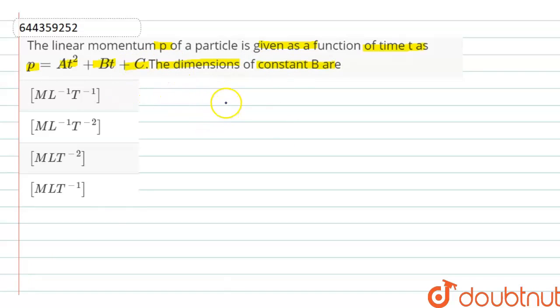So here the equation of linear momentum p as a function of time is p equals to a t square plus bt plus c. So here we can say that the dimension of p is equal to the dimension of at square, is equal to the dimension of b into t, and is equal to the dimension of c.